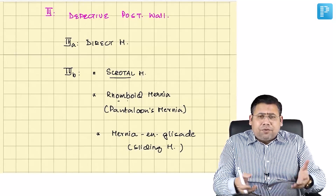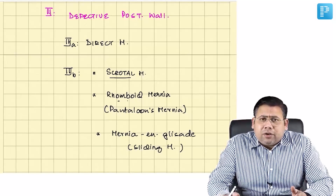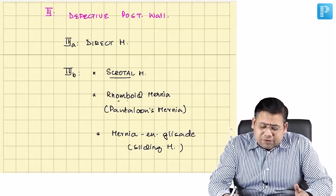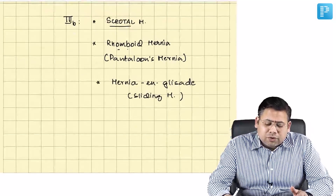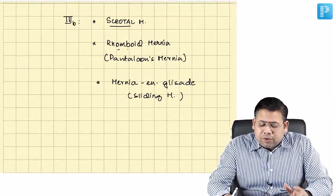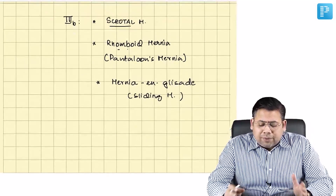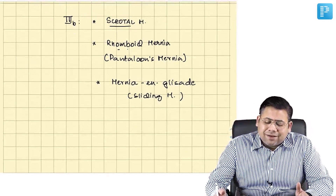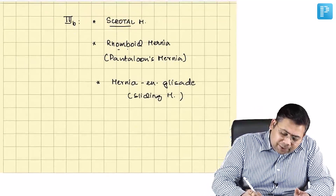The colon — specifically the sigmoid colon — is a very common content on the left. So Type 3B can be scrotal, rhomboid, or hernia en glissade.